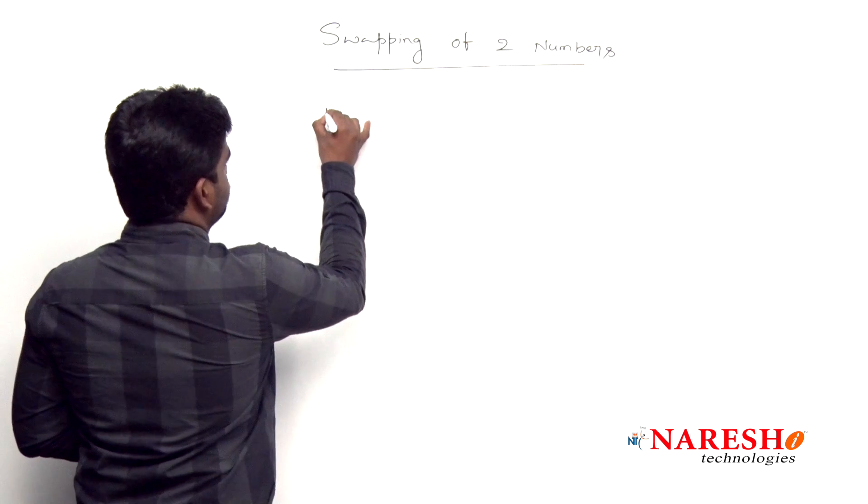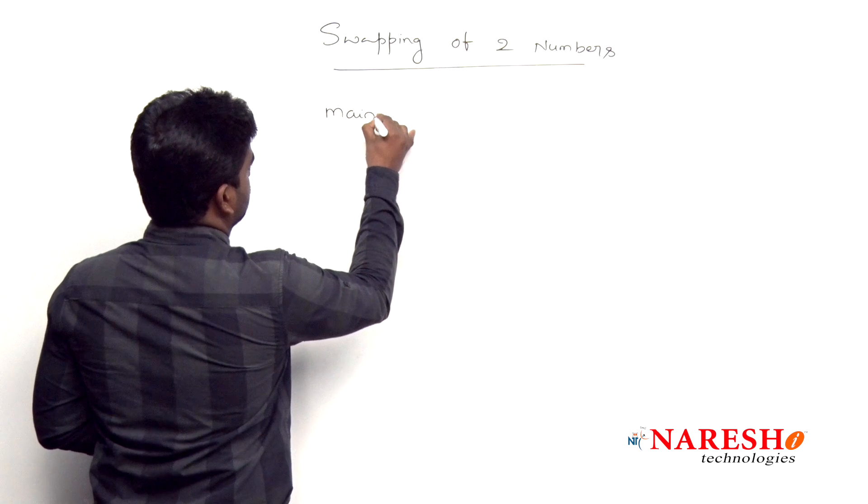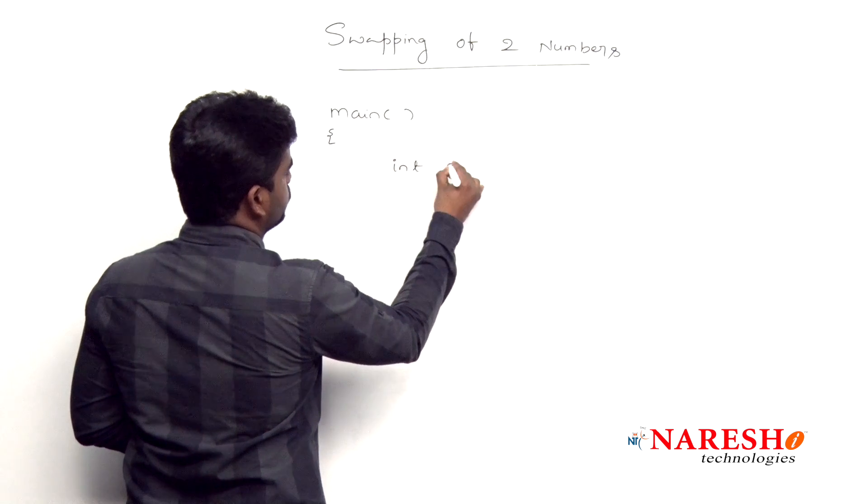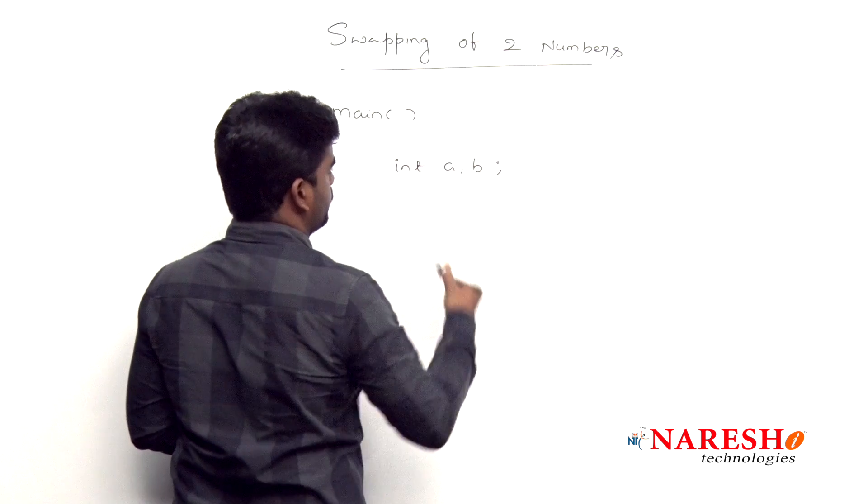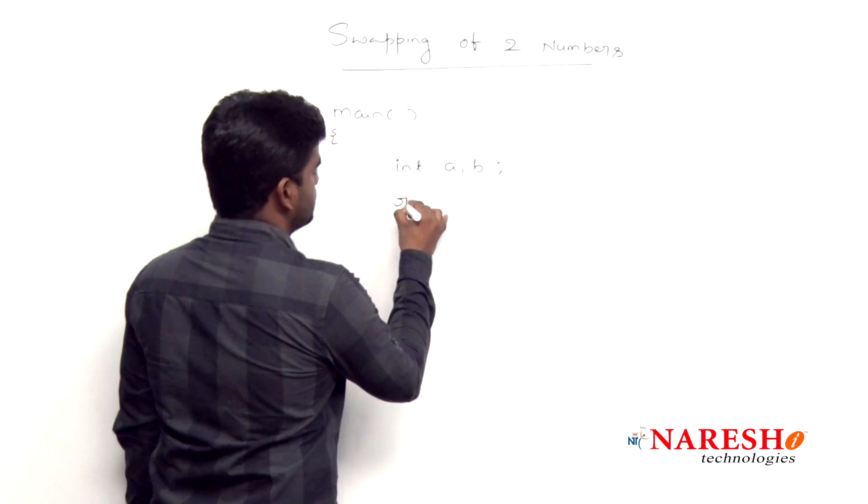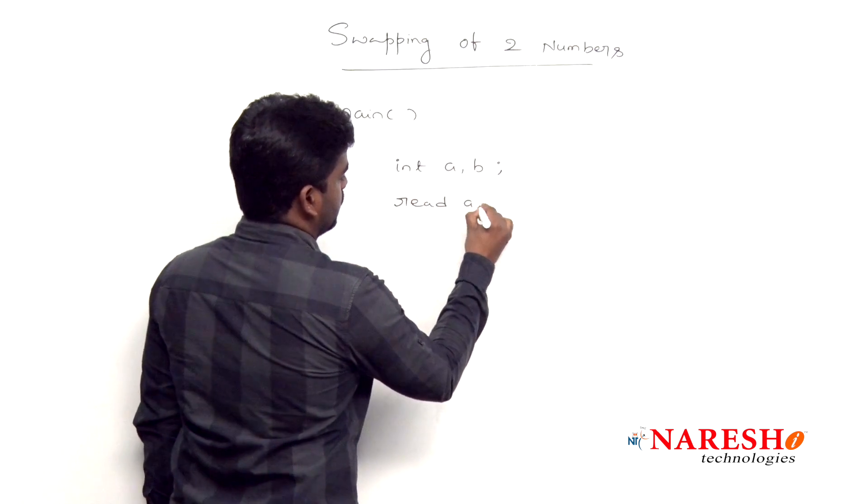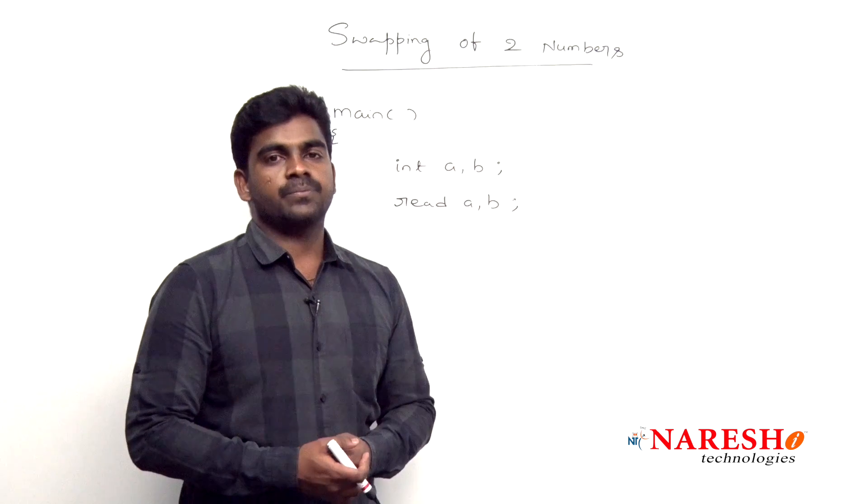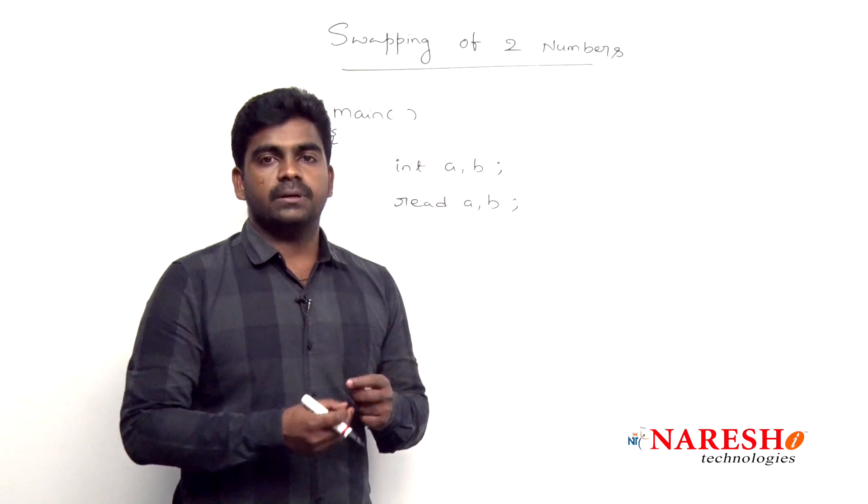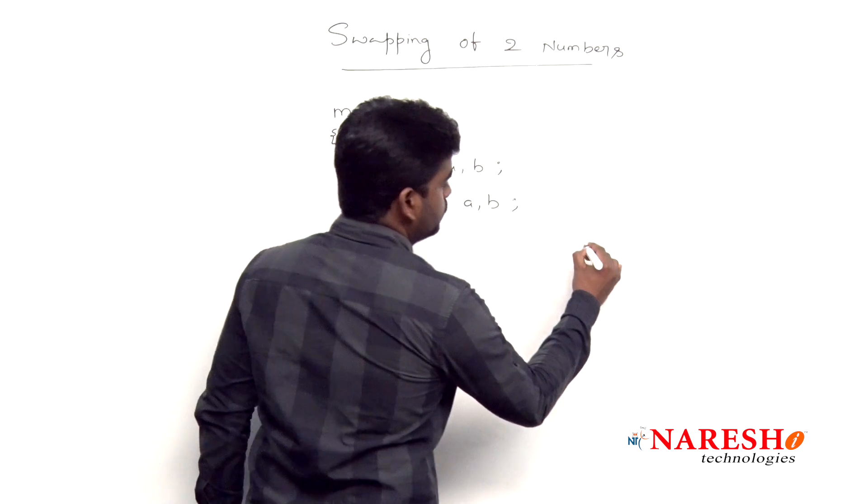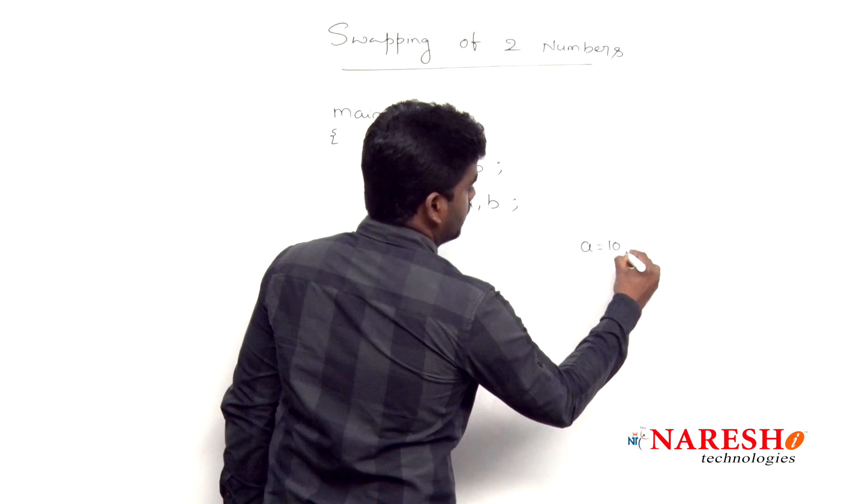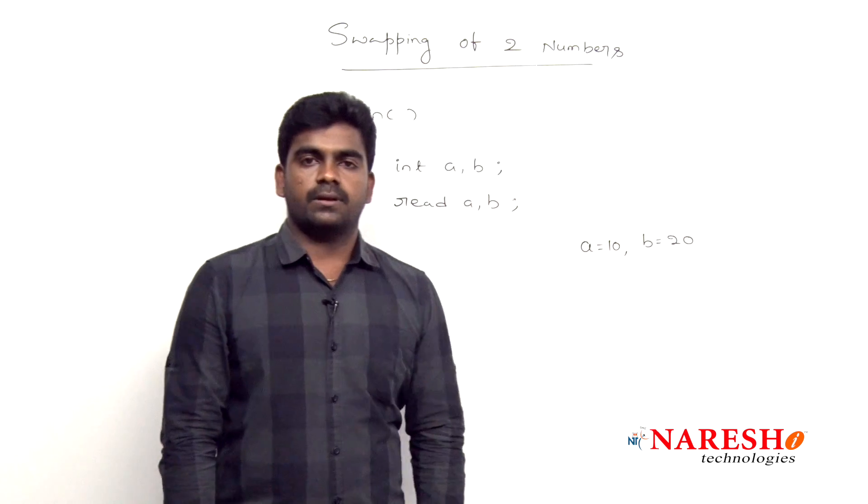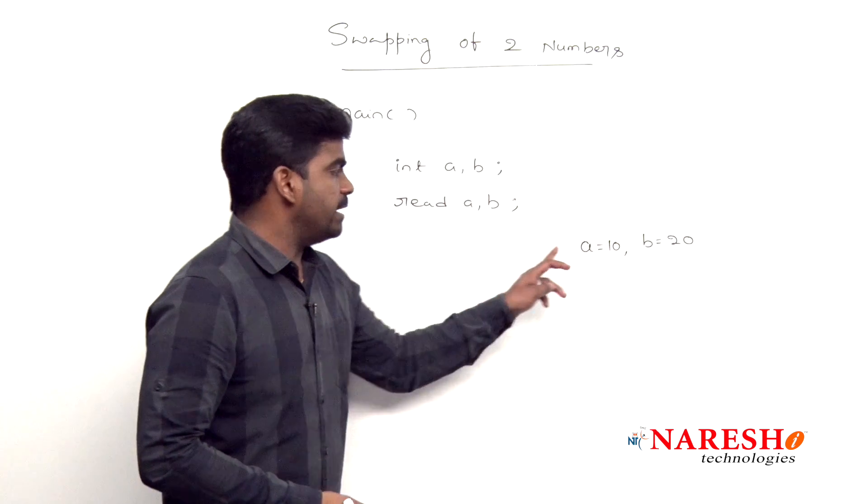First we are reading two numbers into variables a and b. After reading, how to swap without using temp variable? Suppose a value equal to 10 and b value equal to 20.